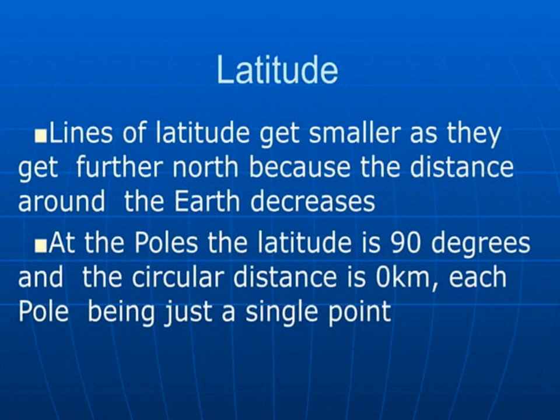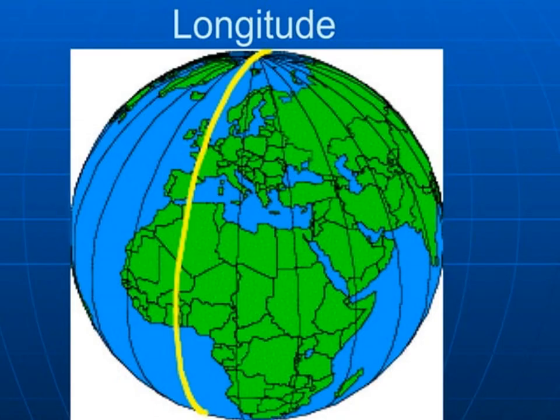Lines of latitude get smaller as they get further north because the distance around the earth decreases. At the poles, the latitude is 90 degrees and the circular distance is 0 kilometers — each pole is just a single point. I hope latitude is clear to everyone.